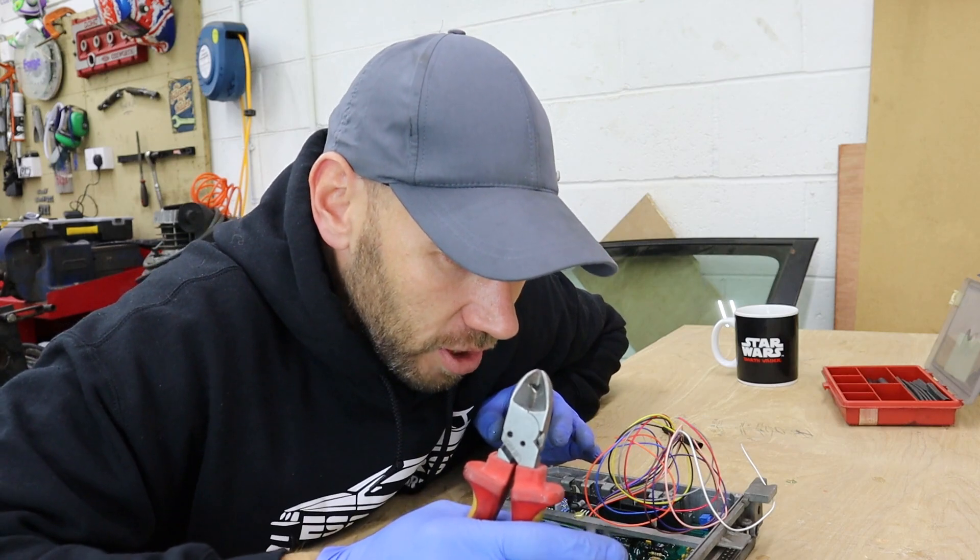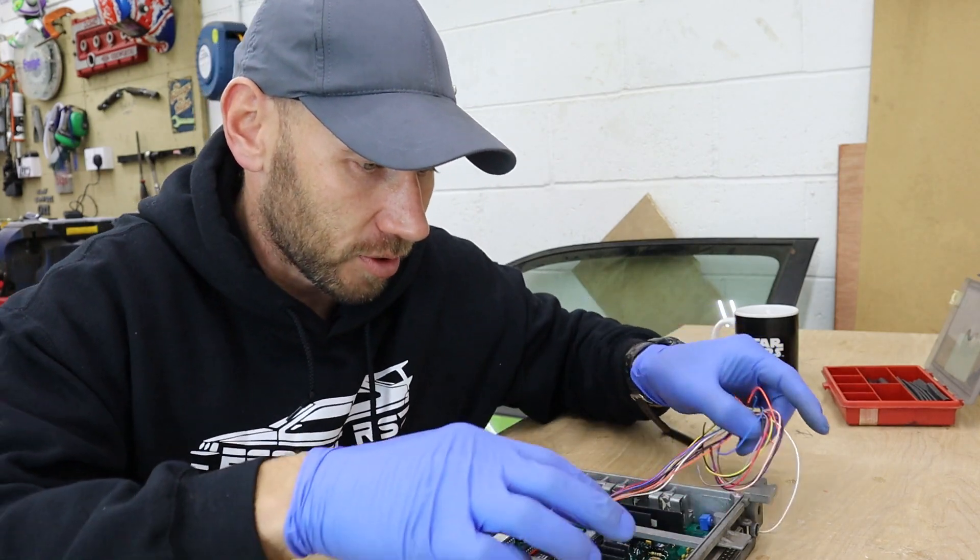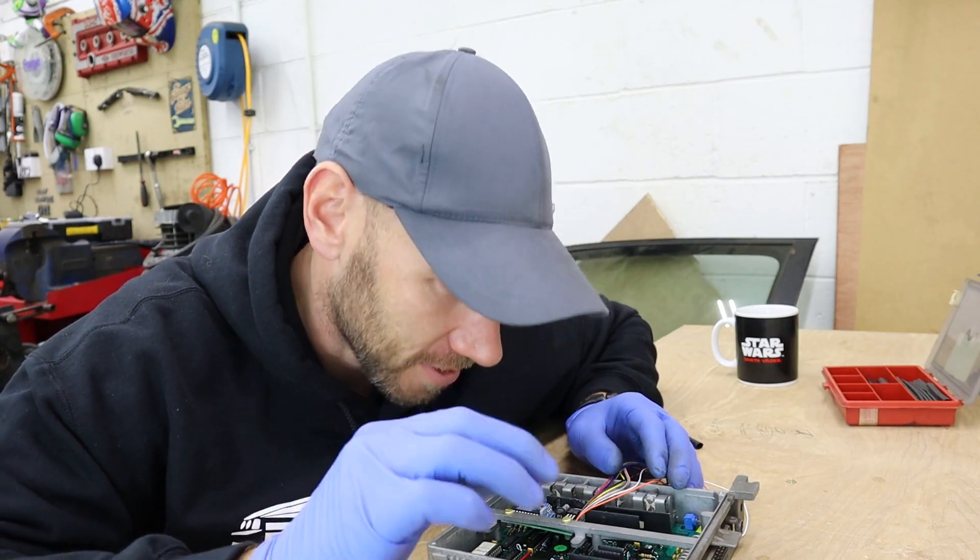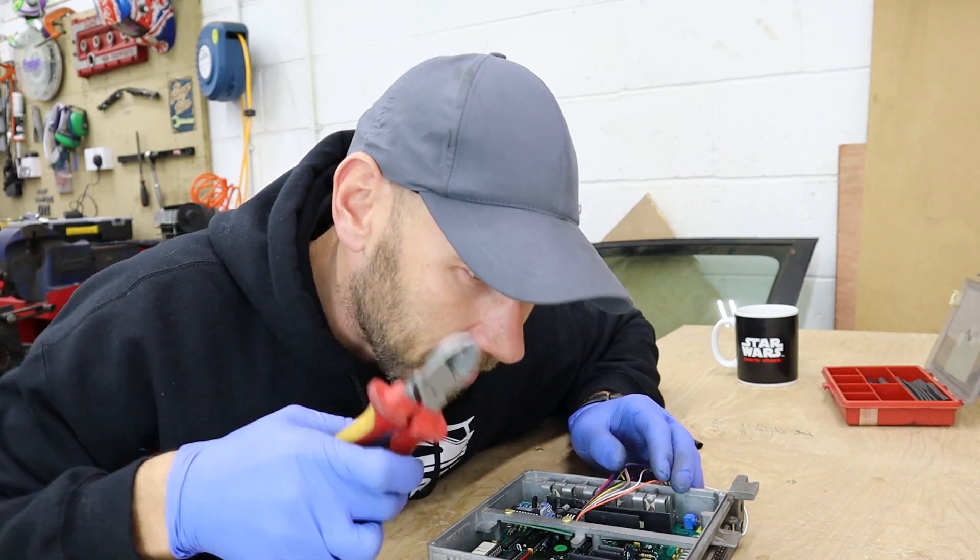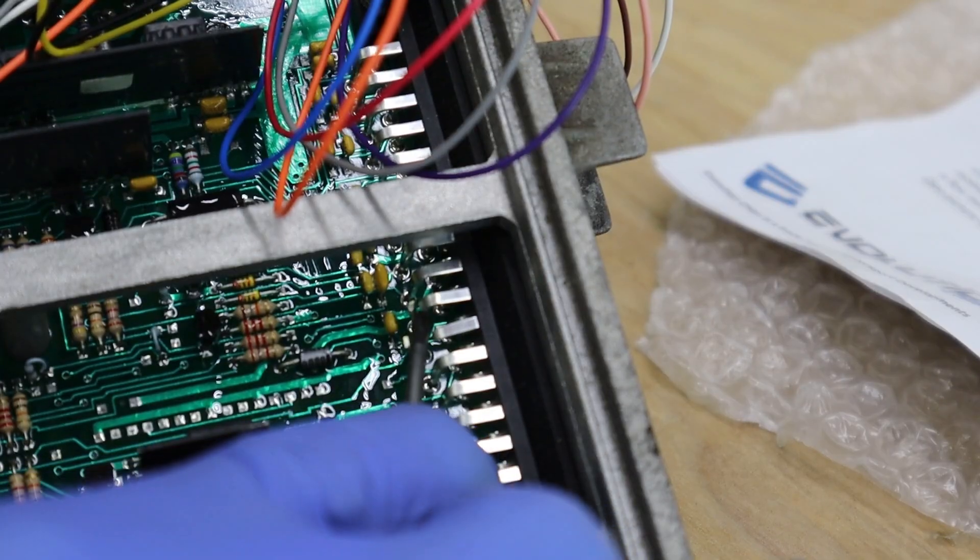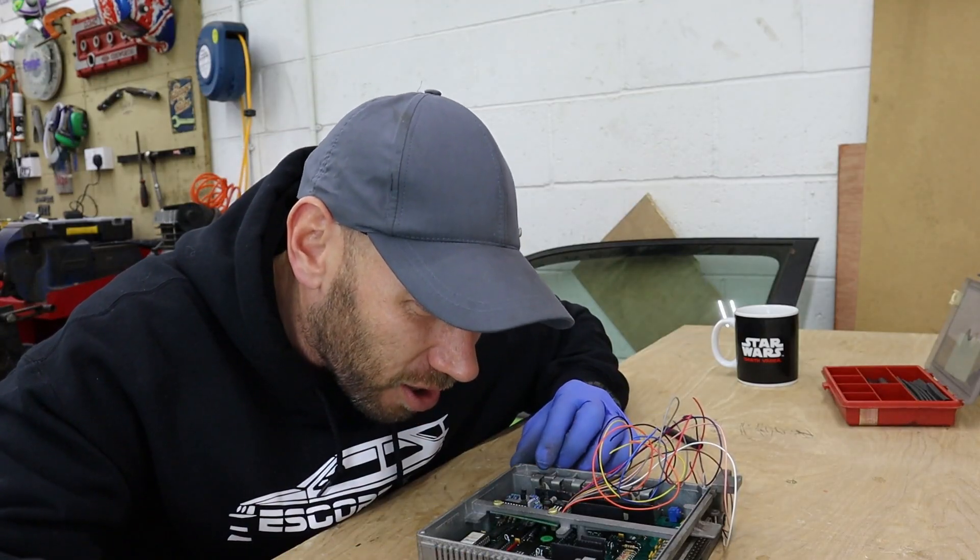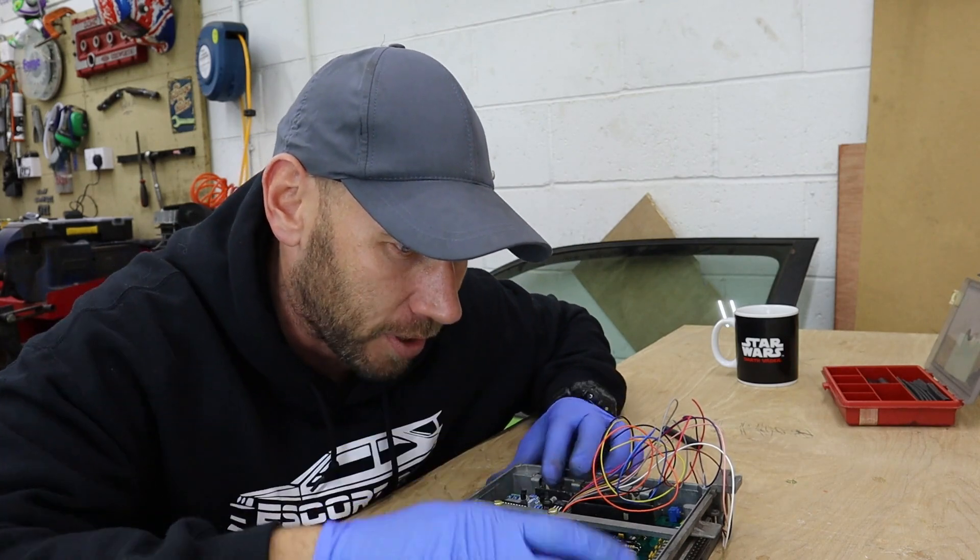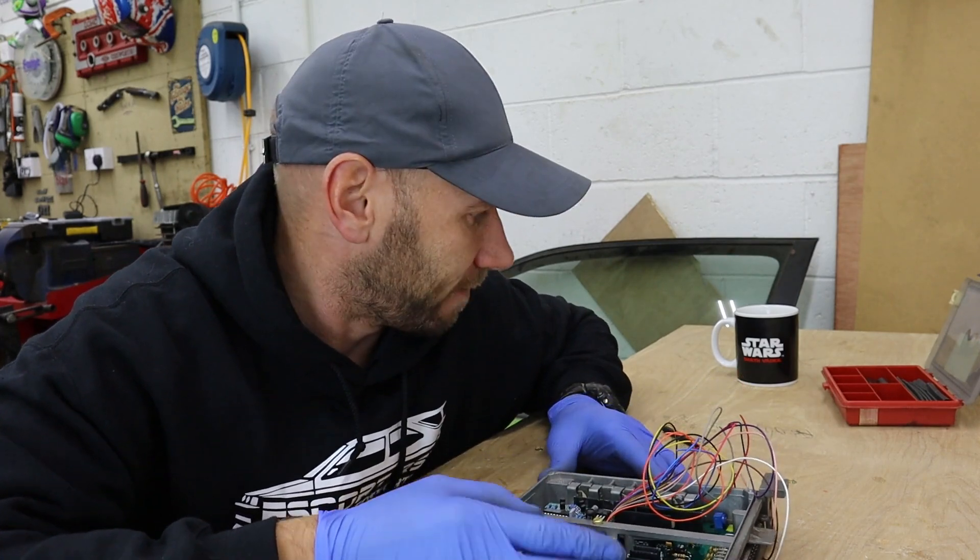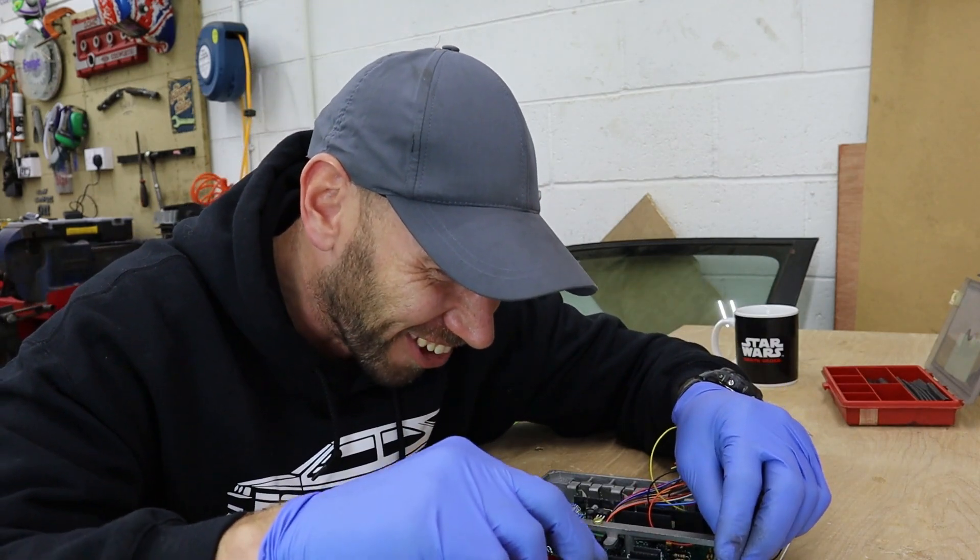Now's the bit where we're going to destroy a perfectly good ECU and we're going to do it by chopping the existing coil driver pins out. Pins 21, 25 and 26. Let's get snippy. Oh crap, I've done the wrong pin. I'm joking, I'm not that stupid.